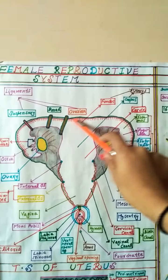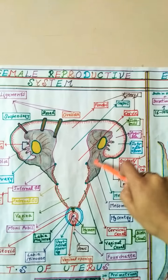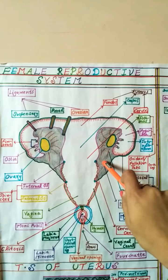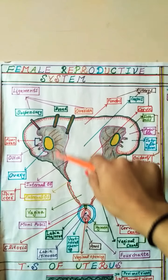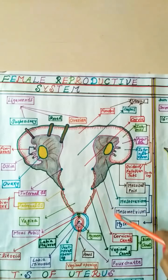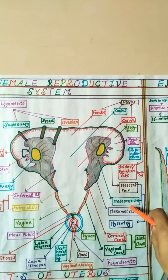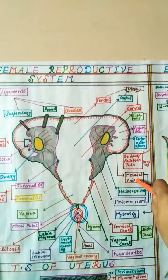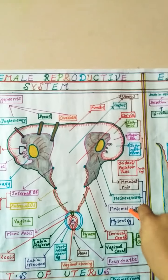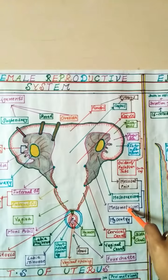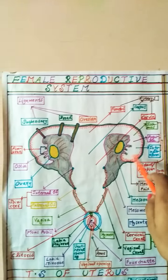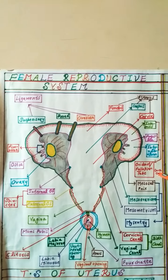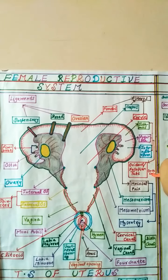A mesentery is present all over the uterus, and in combination with the meso ovarium and mesosalpinx it forms the mesometrium. The oviduct or fallopian tube is approximately 10 to 12 centimeters in length.